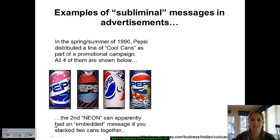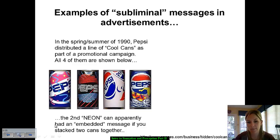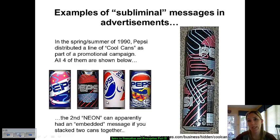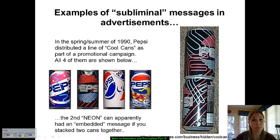Back in the 1990s, Pepsi got into a bit of hot water because they were trying a new kind of branding to get Pepsi's name out there, doing cool can designs during the cola wars between Pepsi and Coke. As part of this promotional campaign, they created four different kinds of designs for these cans. With this neon can design, some people became offended by the fact that if you stacked these cans one on top of another, there was supposedly a very inappropriate subliminal message — you can see an 'S' here, 'E' here, and 'X' down here, spelling out a word.